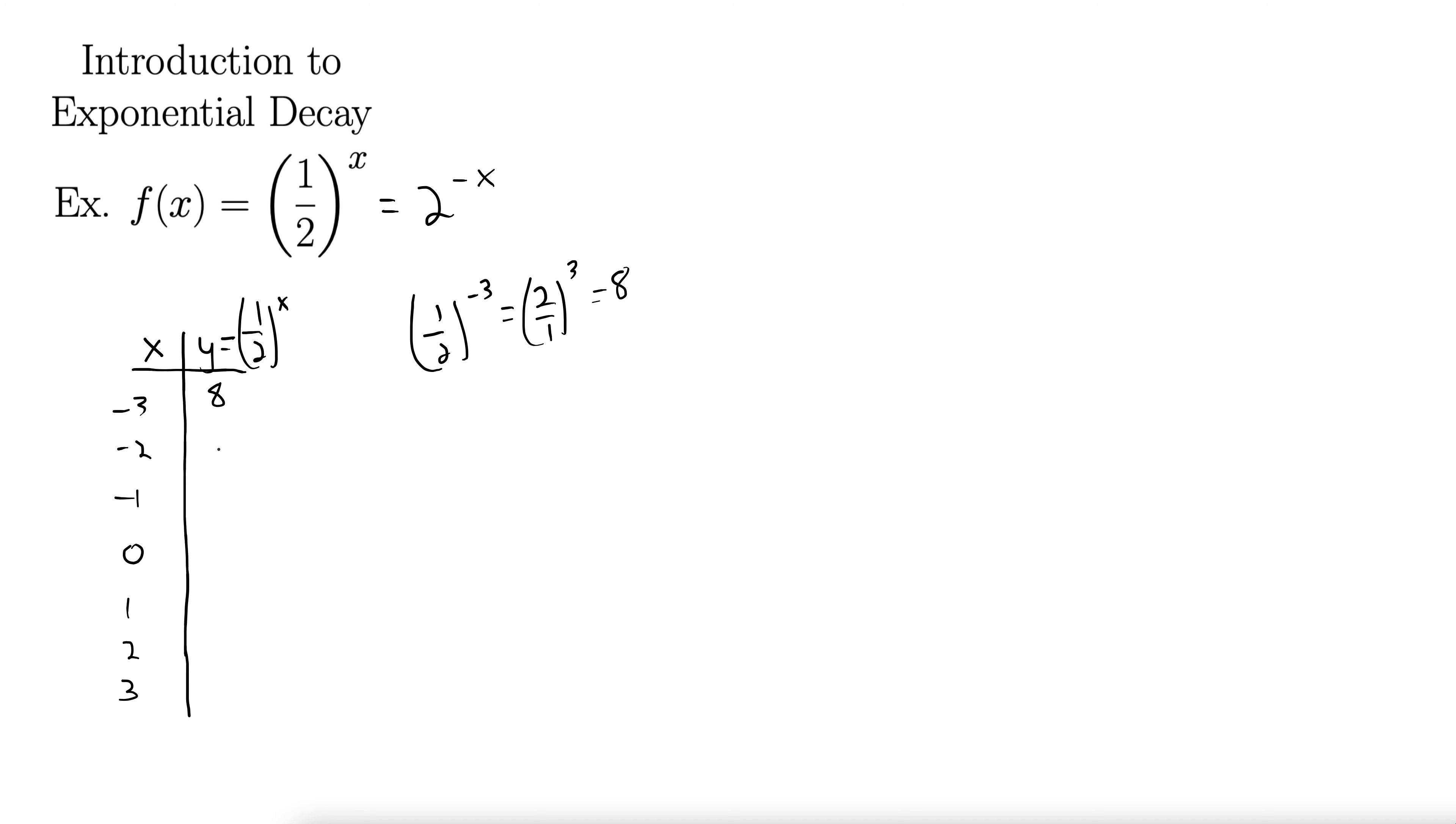Negative 2, so we have 1 half to the negative 2, that just flips it, 2 over 1 to the positive 2. 2 squared is 4.